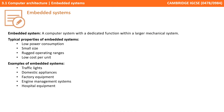Let's just recap what we've covered in this video. An embedded system is a computer system with a dedicated function within a larger mechanical system. Its typical properties include low power consumption, small size, rugged operating ranges, and low cost per unit. Typical examples include traffic lights, domestic appliances, factory equipment, engine management systems, and hospital equipment.